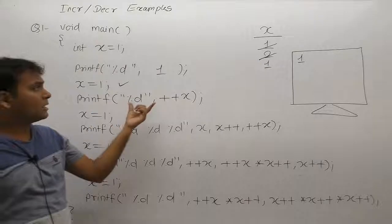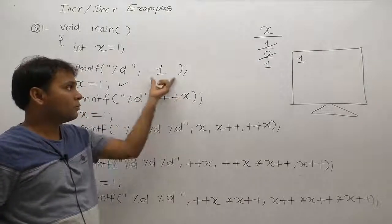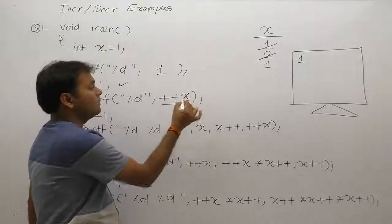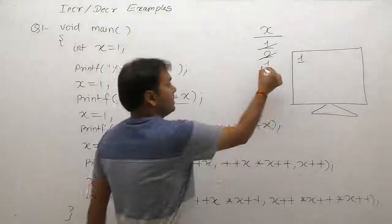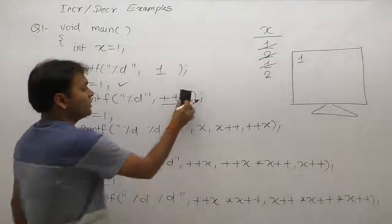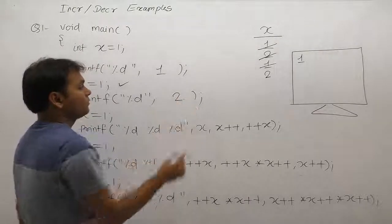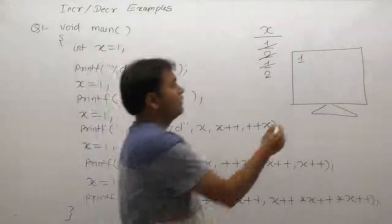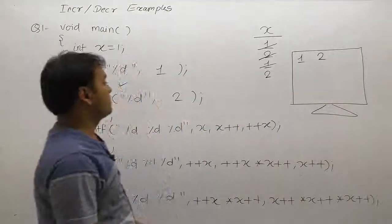Again x is initialized by 1. Now for the pre-increment case: pre means first increment then replacement. So x is incremented first, x becomes 2, then replacement — x is replaced by 2. The final value printed is 2.